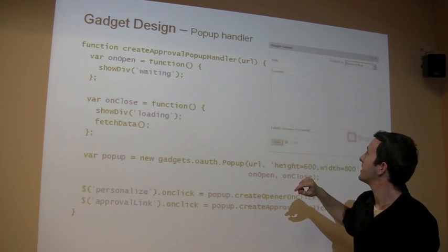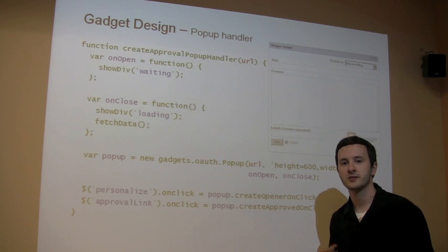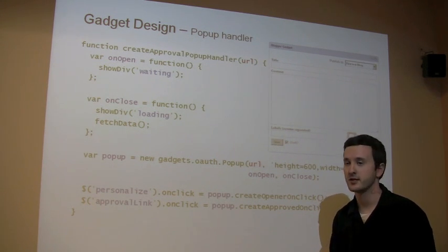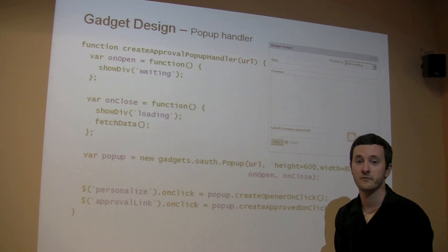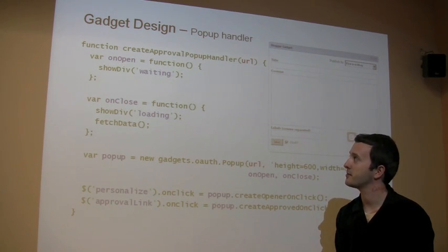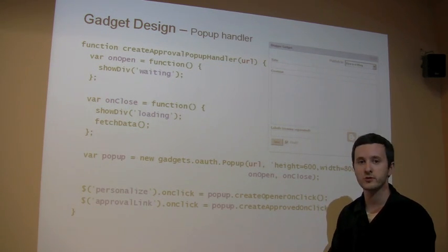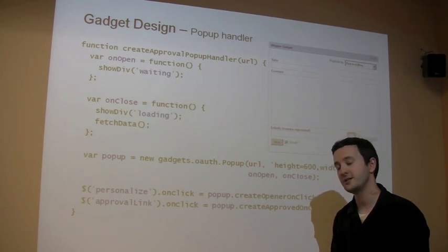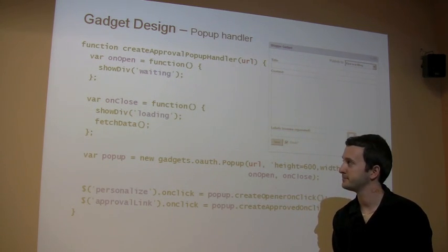Last but not least, this is the normal state of the gadget. The gadget's been authenticated. The token is registered in the OAuth proxy, and you can post away to Blogger via iGoogle, which is really cool. We'll talk about how to do this in OpenSocial, and then how much easier it is using the GData JavaScript client library.